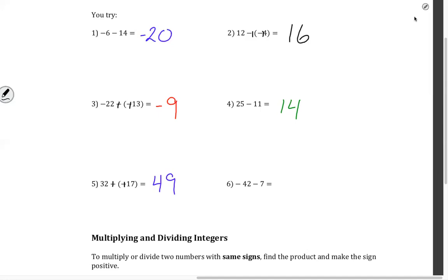And then the last one. Ben, negative 42 minus 7. So if you borrow 42 dollars from me... Negative 49. That is the opposite of 7 squared.